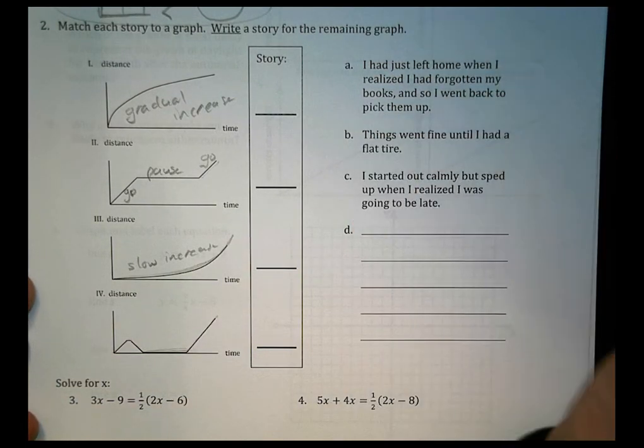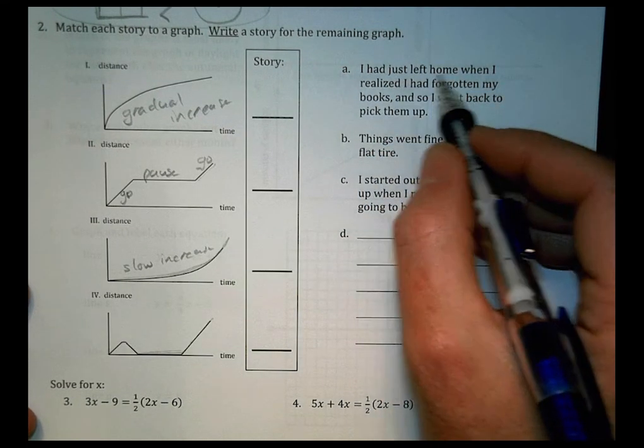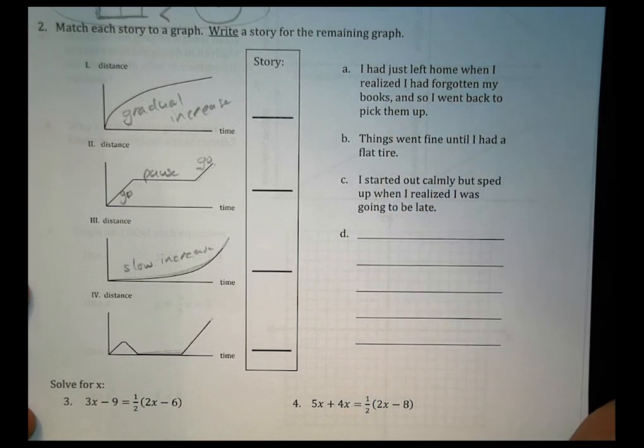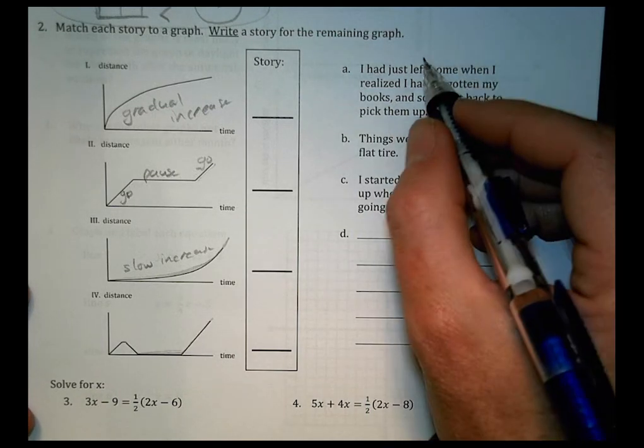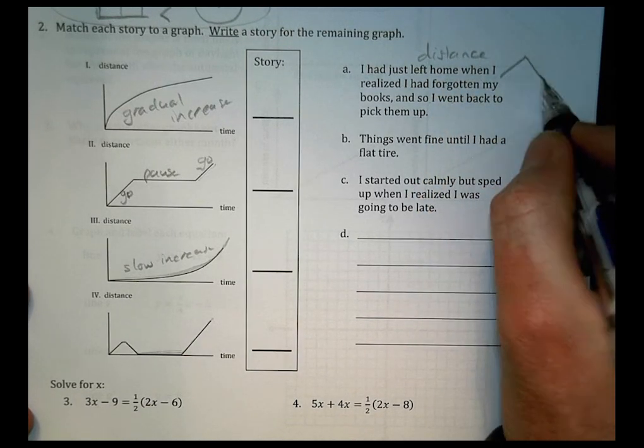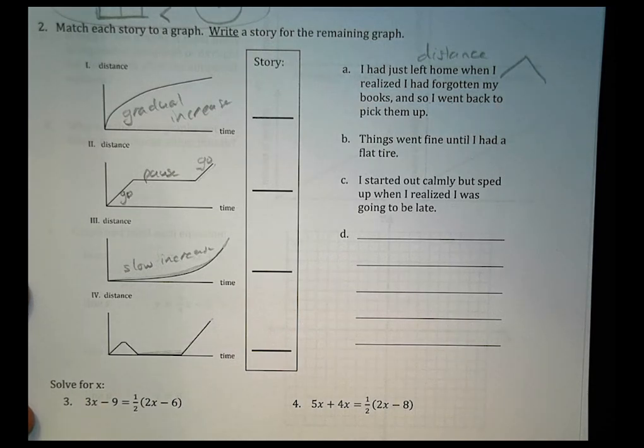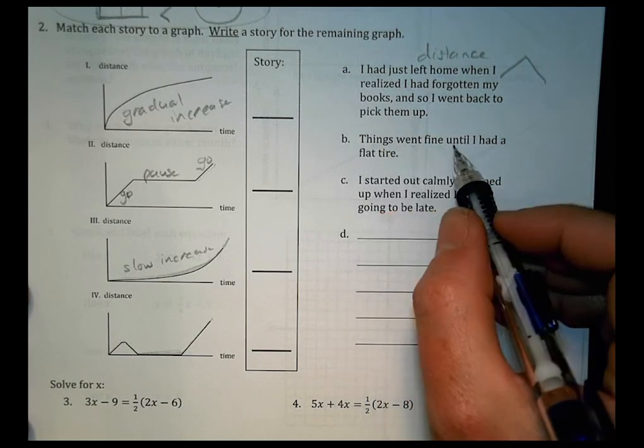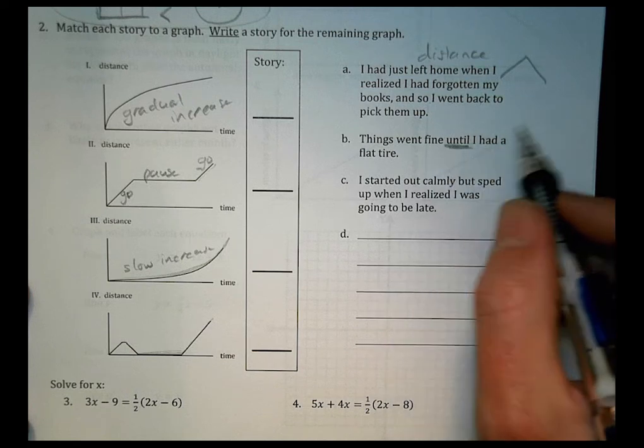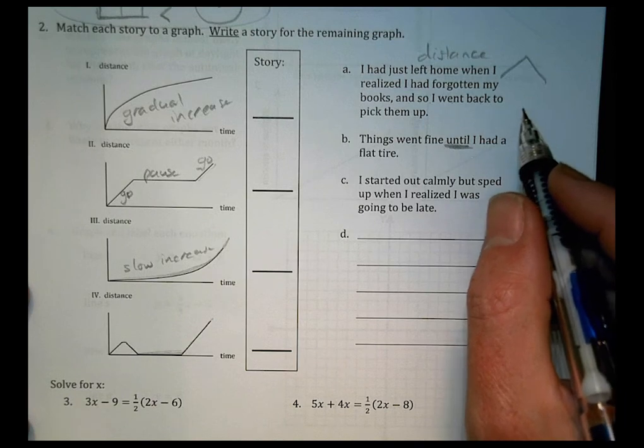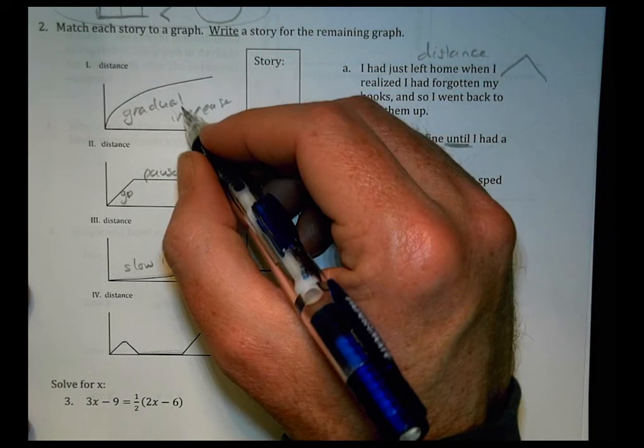So let's look at our stories, which ones match here. I had just left home when I realized I had forgotten my books, so I went back to pick them up. So in terms of distance here, it's someone who's going to go and then they're going to come back because they forgot the books. So can you see which one of these is going somewhere and coming back up? Then we have B. Things went fine until I had a flat tire.